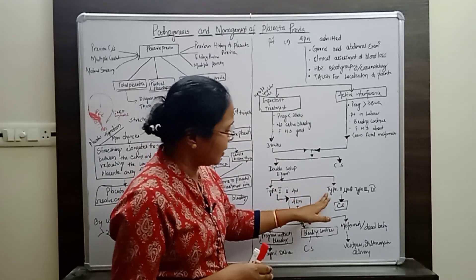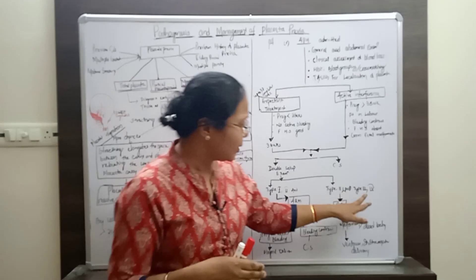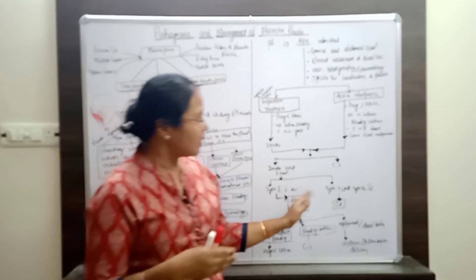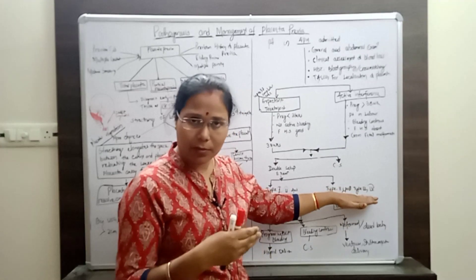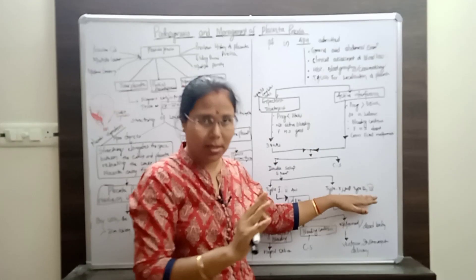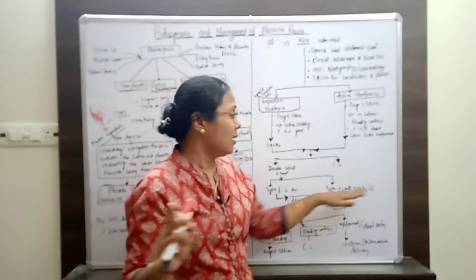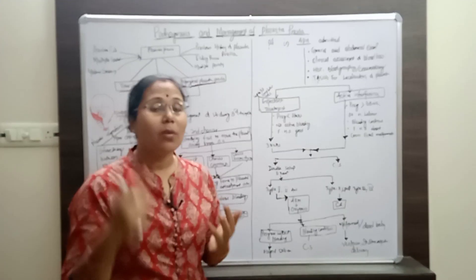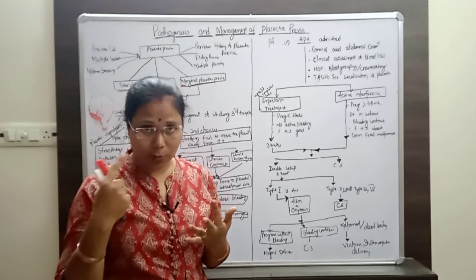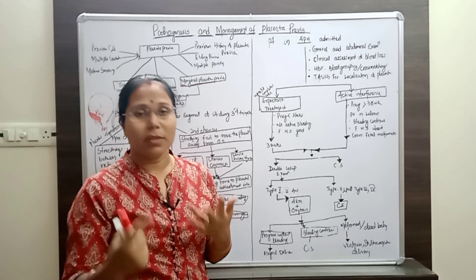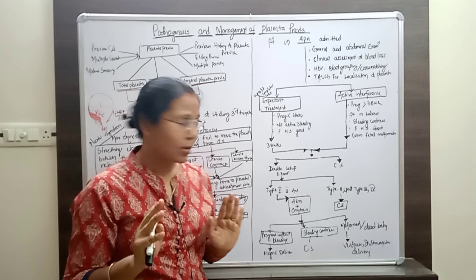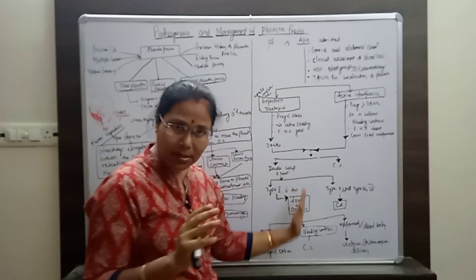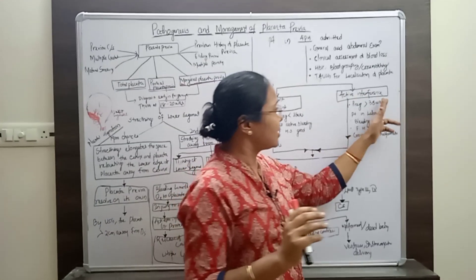For type 2 posterior, type 3, and type 4 placenta previa, these are taken as a major problem. Once confirmed by transabdominal ultrasonography, we do not take a chance on normal delivery for type 2 posterior, type 3, and type 4 — we go directly for cesarean section. These are the expected treatment steps.